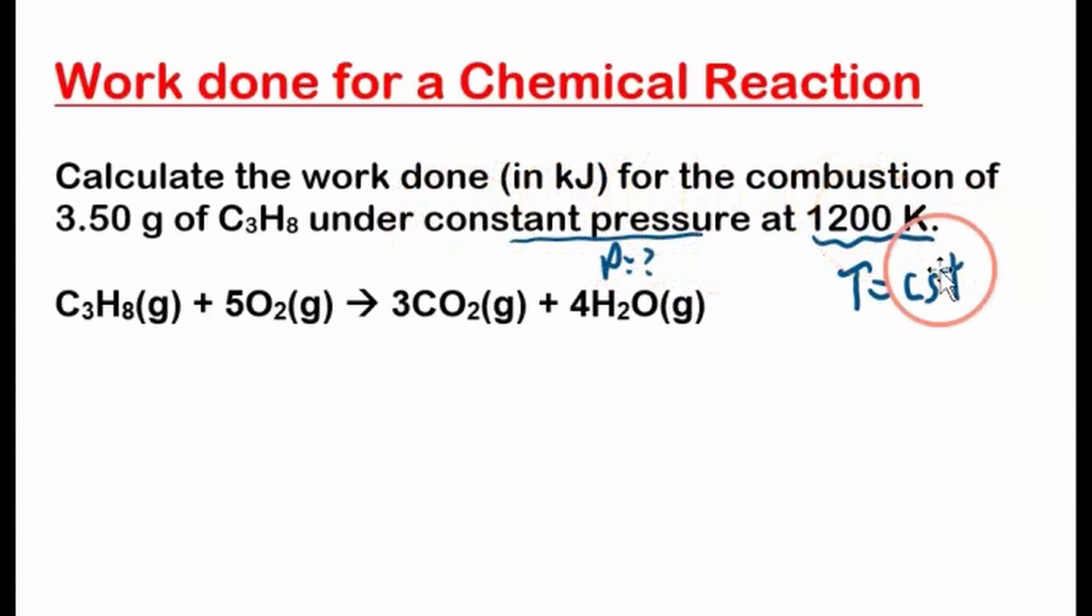So we have to assume that this temperature is constant as well, because it's at this temperature and we don't know what the pressure is. Okay. So for pressure volume work, because these are gases that are doing work, so there's going to be expansion or compression. So work is negative P delta V. This is true for constant pressure processes, PV work only.